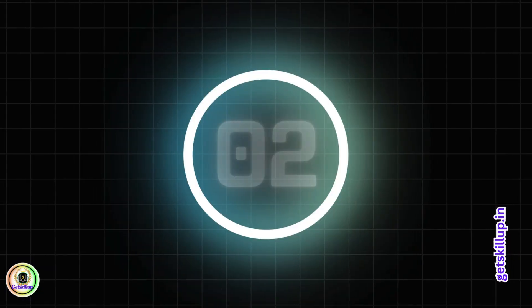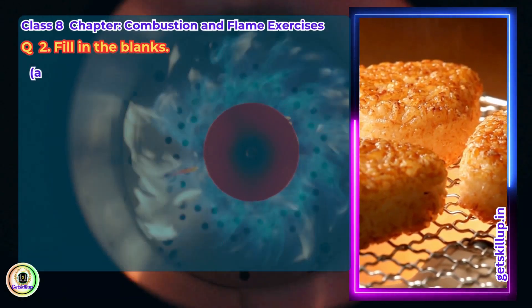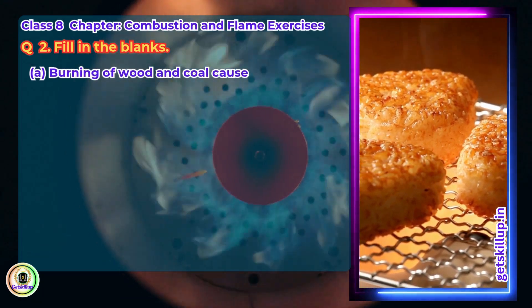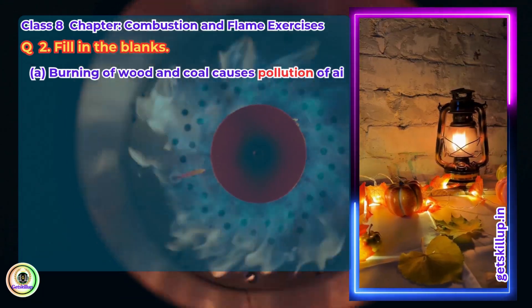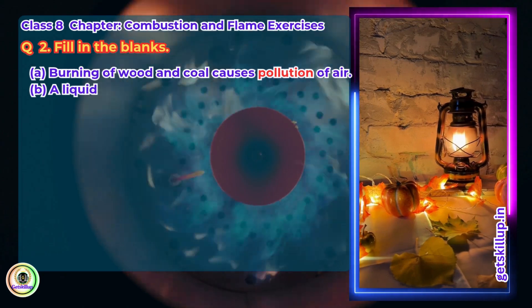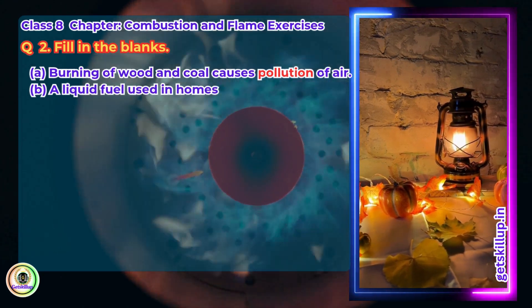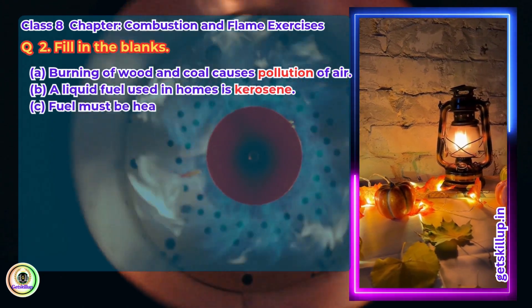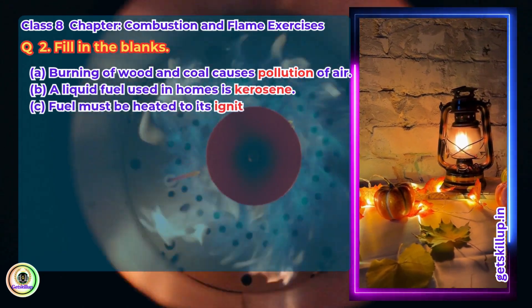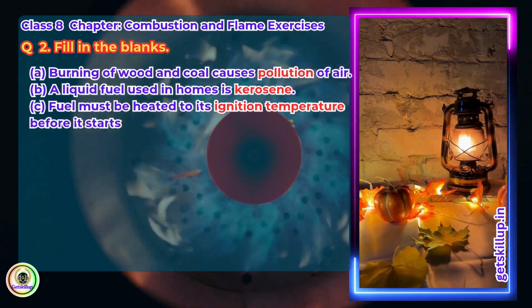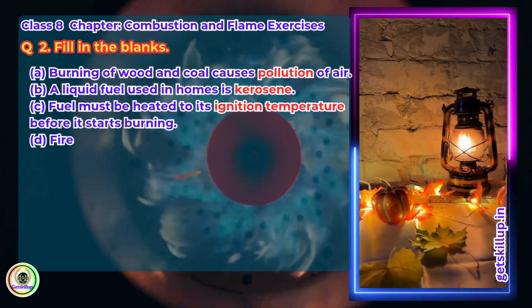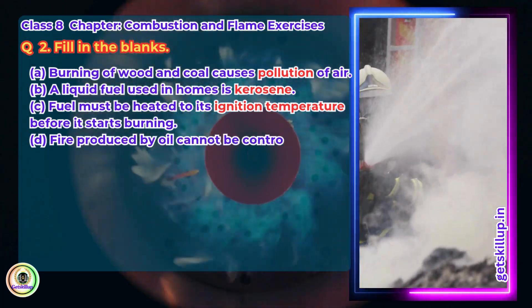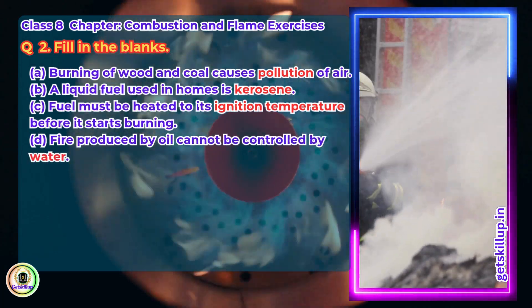Question 2: Fill in the blanks. Burning of wood and coal causes pollution of air. A liquid fuel used in homes is kerosene. Fuel must be heated to its ignition temperature before it starts burning. Fire produced by oil cannot be controlled by water.